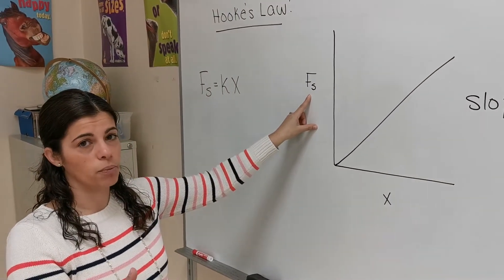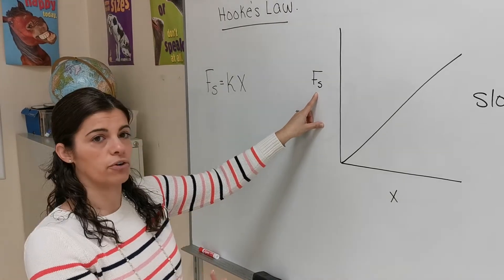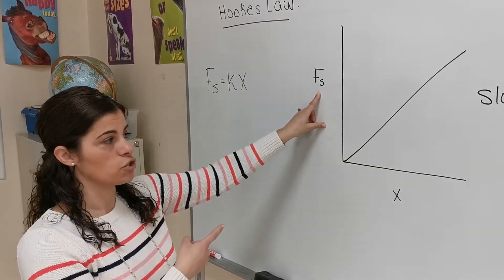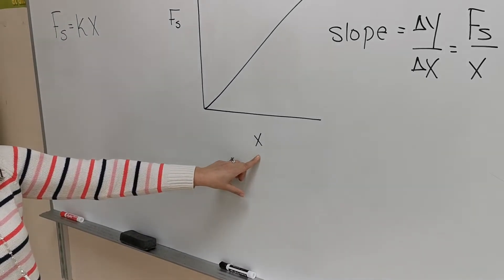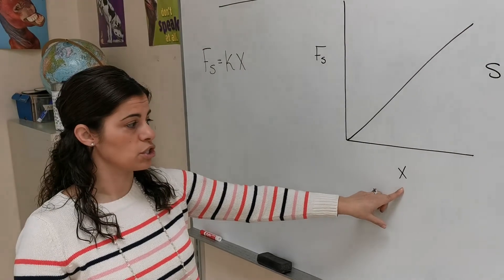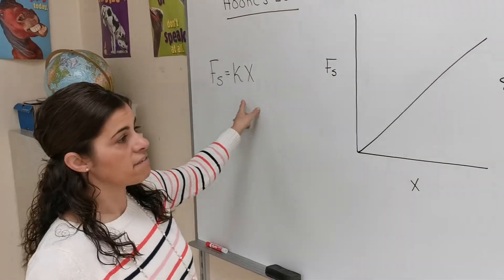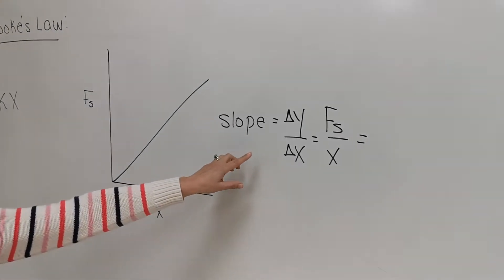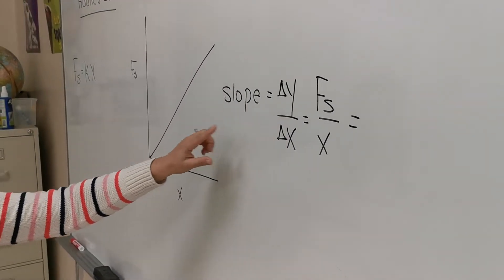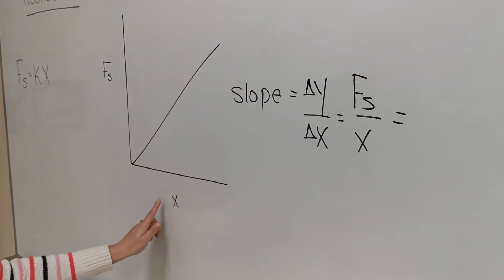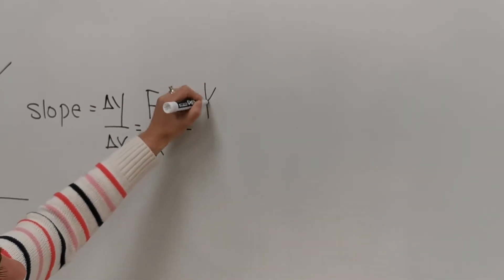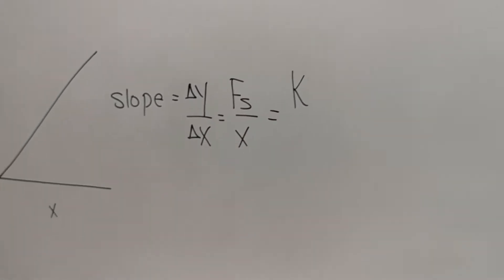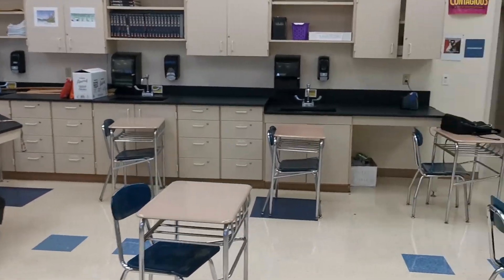The force on the spring in this lab will be the weights we are hanging, so it's a vertical force that will cause the spring to stretch — those will be our half-Newton weights. On our x-axis we're going to have our elongation, which is the stretch of the spring. Taking our Fs = kx equation and solving for the slope — change in y over change in x — the slope will represent our spring constant k.